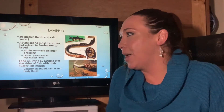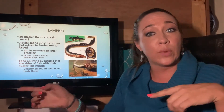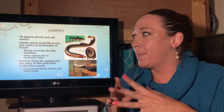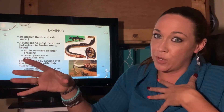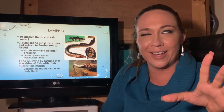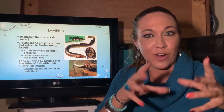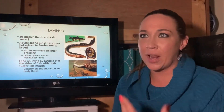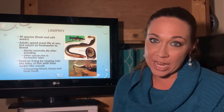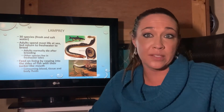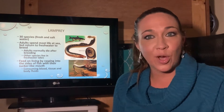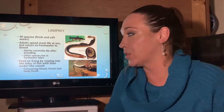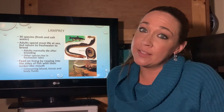Next are the lampreys — about 30 species, and unlike hagfish they can be freshwater or marine. Most spend their adult life at sea but travel to freshwater to reproduce — similar to salmon. They reproduce once and then die. Freshwater species stay in those freshwater sources. This migration between salt and fresh water is a concept we'll return to in ecology.